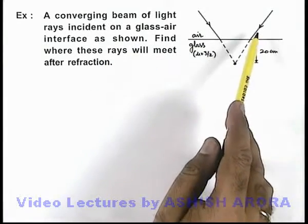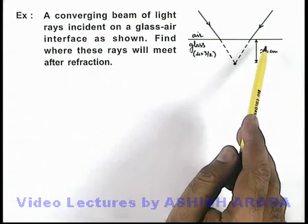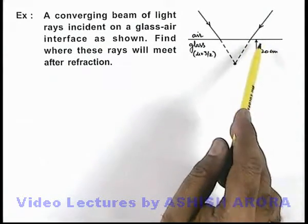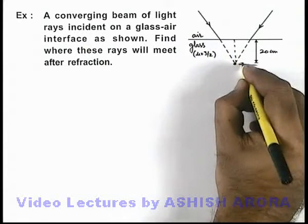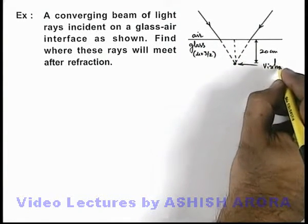Here, as the rays are incident on the boundary in such a way that these are meeting at a distance 20 centimeters from the boundary, this point can be regarded as a virtual object.